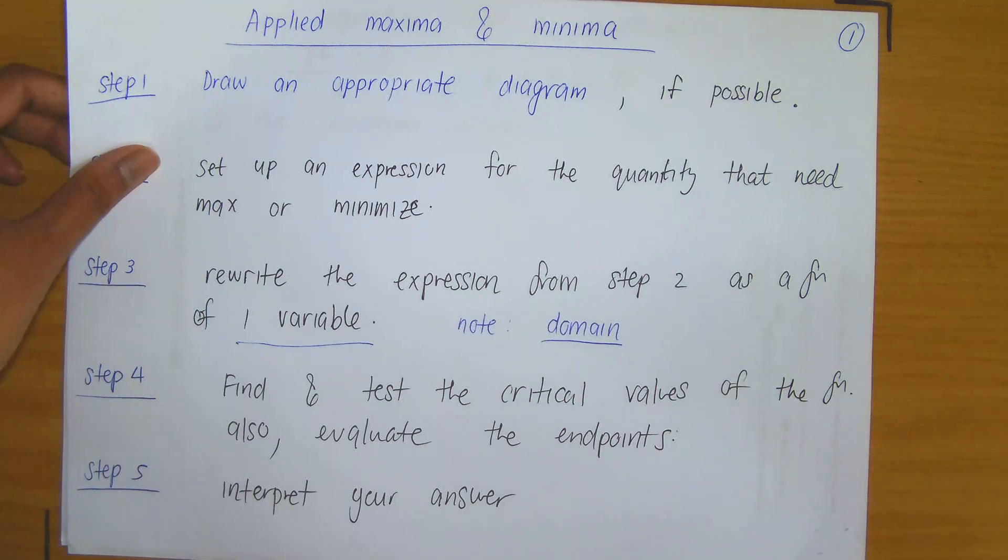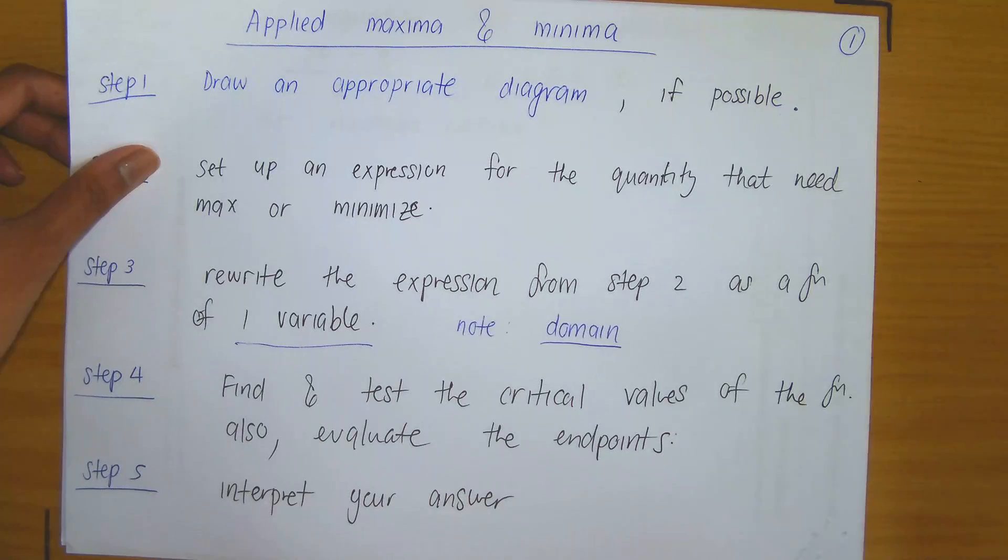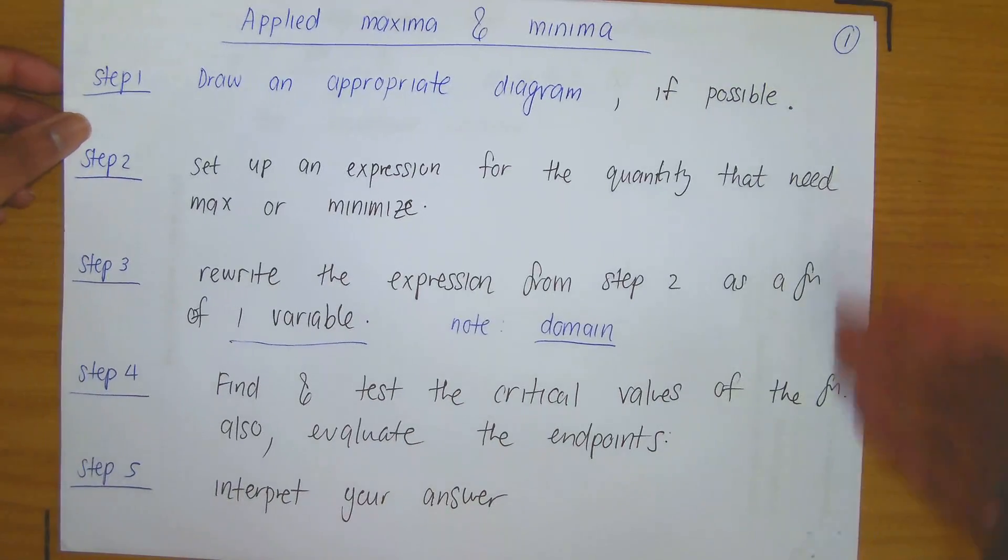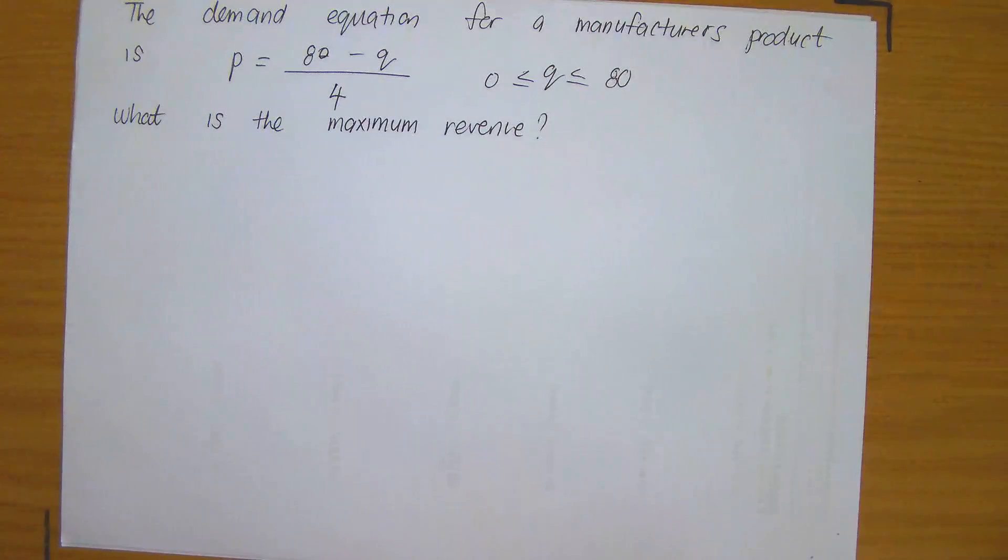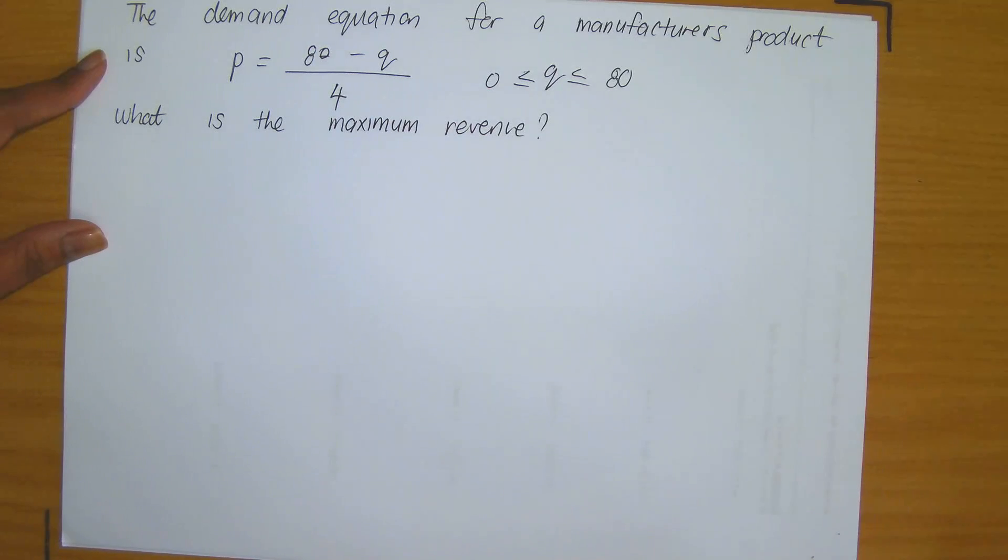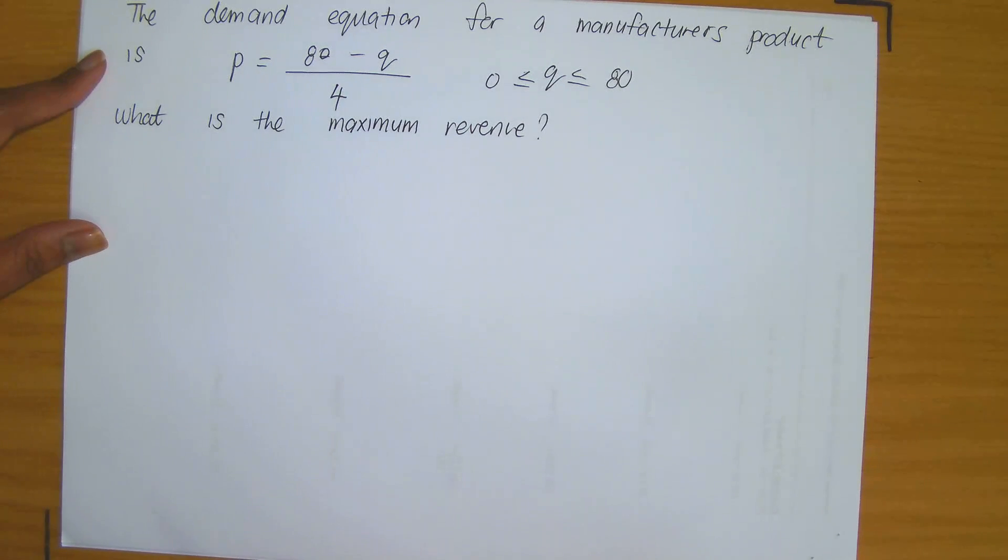So whatever you've gotten in step four, ensure that you're able to interpret it and also ensure that you've answered the question that was being asked. So keeping this five-step procedure in mind, let's consider the following example. The demand equation for a manufacturer's product is P equals 80 minus Q divided by 4, where Q is bounded between 0 and 80.